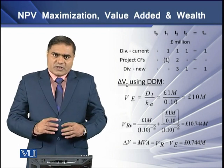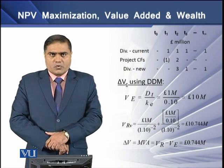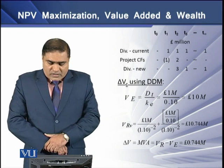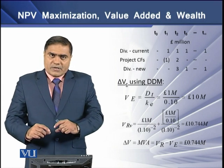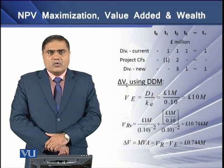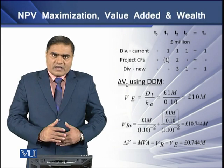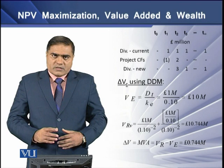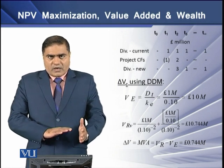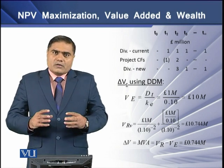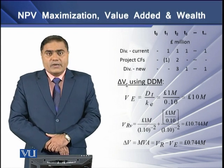We can determine the change in firm's value using the dividend discount model — specifically the constant growth model for perpetual cash flows, dividing the dividend at time T by the firm's cost of equity. The current value of the firm at the existing level is 10 million pounds. For the revised value with the reinvestment plan, we discount current period dividend at the firm's cost of capital over two time periods, yielding a revised figure of 10.744 million.